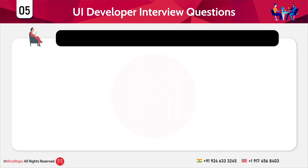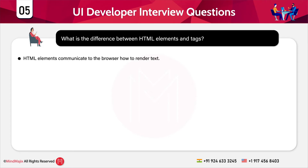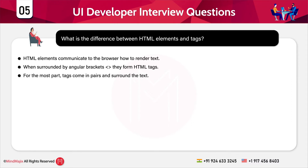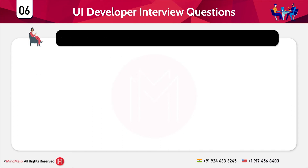Based on the previous question, the next one asks: what is the difference between HTML elements and tags? HTML elements communicate to the browser how to render the actual text, whereas when surrounded by angle brackets they form HTML tags. For most parts, tags come in pairs and surround the actual text.